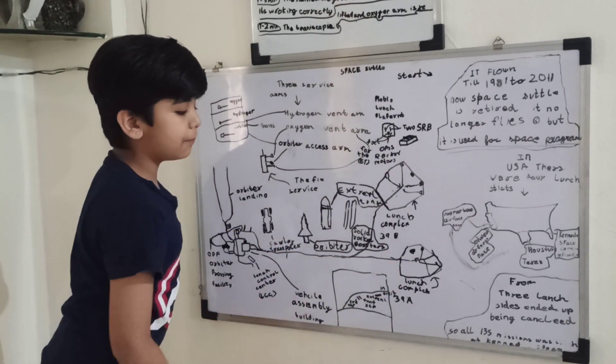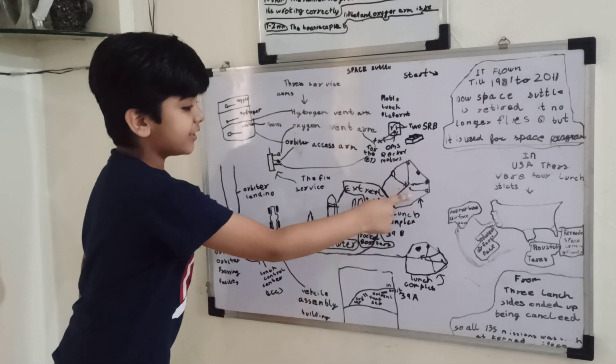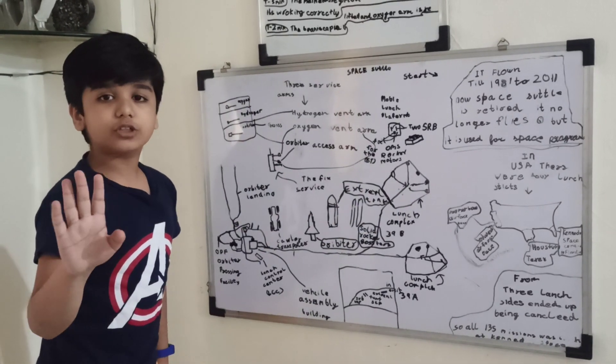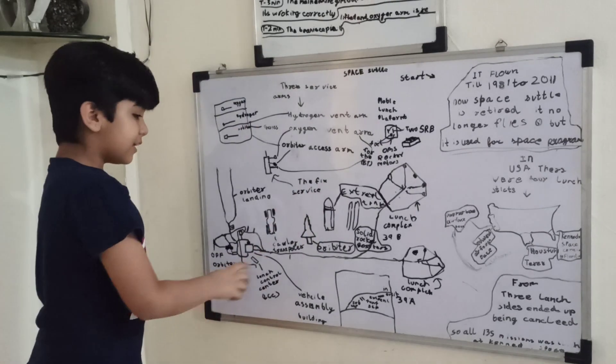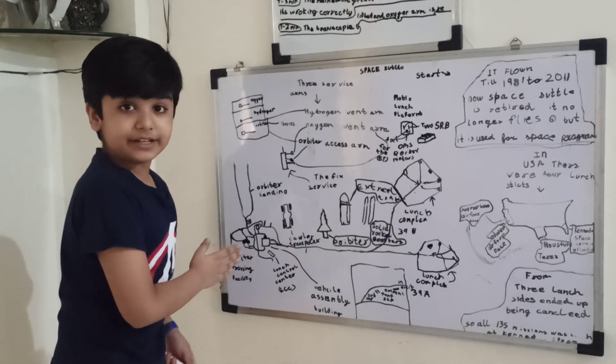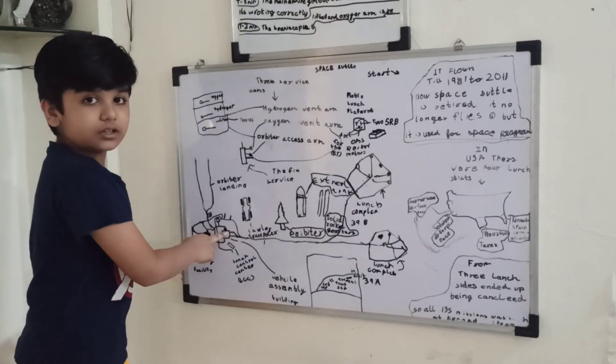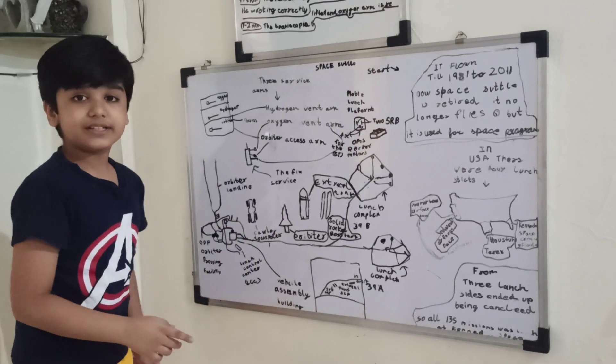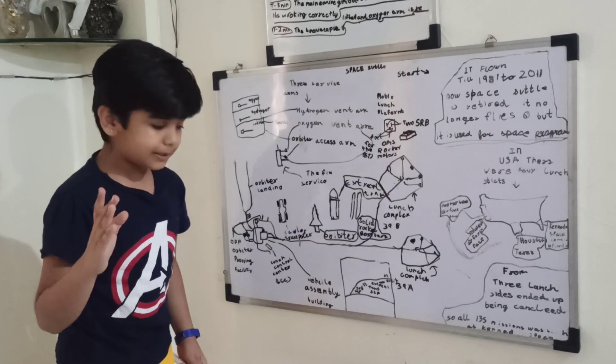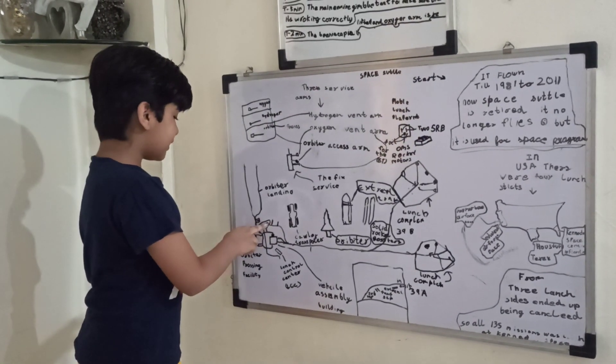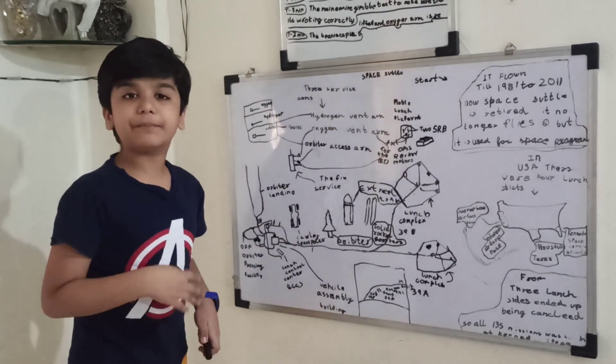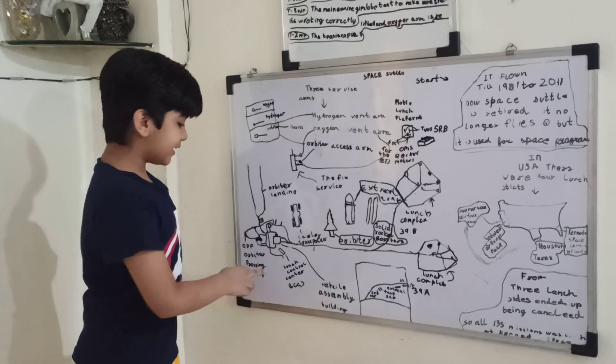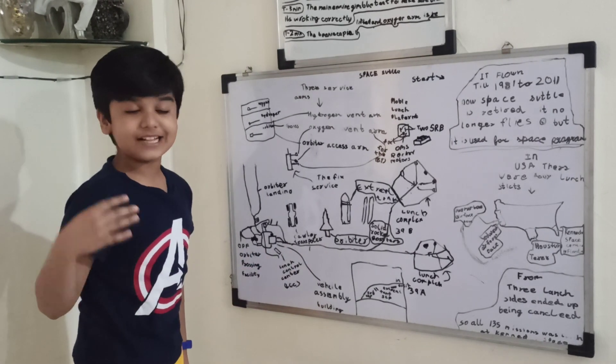Here is launch complex 39A and 39B. Both shuttle missions were launched from both of these pads. The buildings are way over here. This is called the VAB, the Vehicle Assembly Building. There are three OPF buildings, Orbiter Processing Facility, and here is the launch control center, LCC.